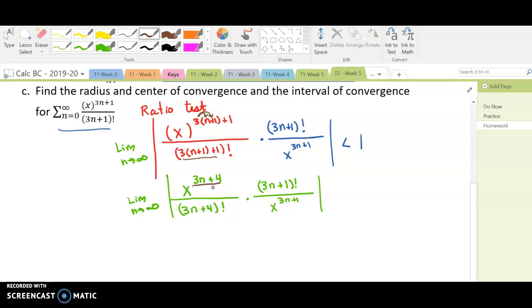And now we'll start breaking down what these can really be rewritten as. So keep in mind 3n plus 4 factorial and 3n plus 1 factorial are separated by the terms after 3n plus 1.